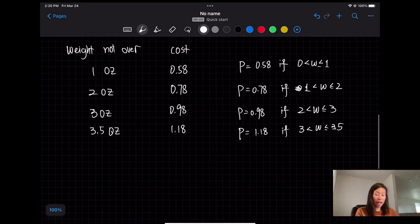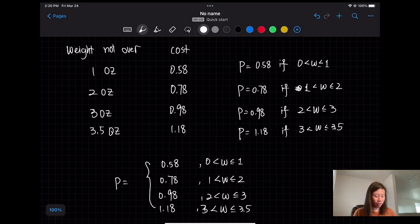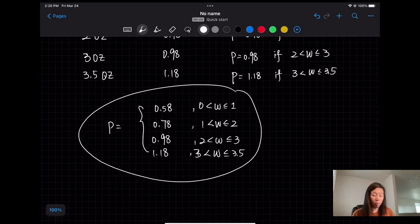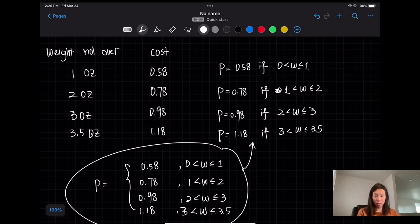So this thing is called a piecewise function. If we want to write it in piecewise function form, it's going to look like this: P equals 58 cents if the weight is between 0 and 1, 78 cents if the weight is between 1 to 2, 98 cents if the weight is between 2 to 3, and 1.18 if it's 3 to 3.5. So in this form it's called piecewise function. Basically it means different formulas for different parts.